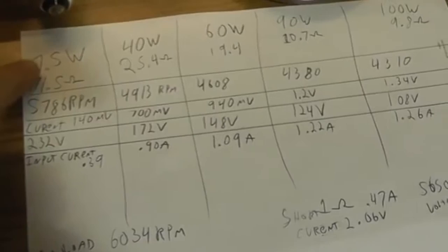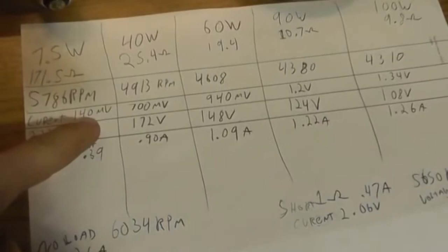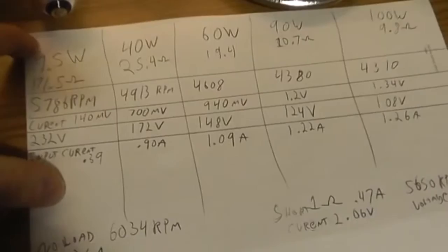I need to get out of the light maybe. So, our lower wattage is a higher resistance, the RPM is higher, the current is lower, the voltage is higher, the input current is lower.